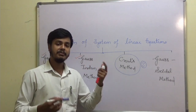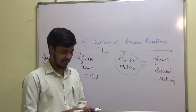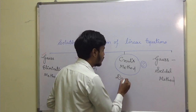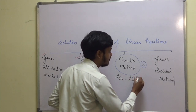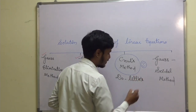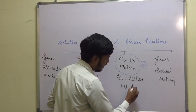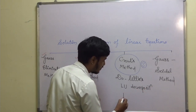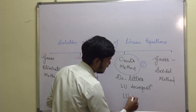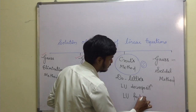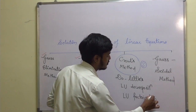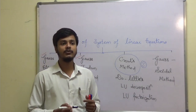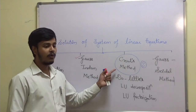We have some different names for Krauss method. Krauss method is also known as Doolittle's method. It is also known as LU decomposition method and also known as LU factorization method. These are the different names of Krauss method, and in this learning video we are going to see what is the working rule of Krauss method.